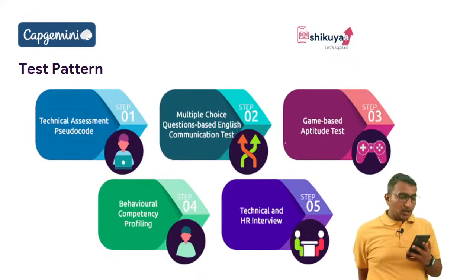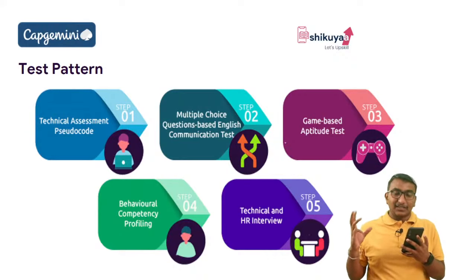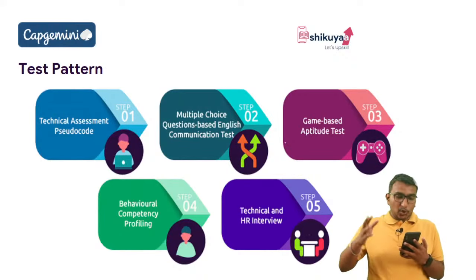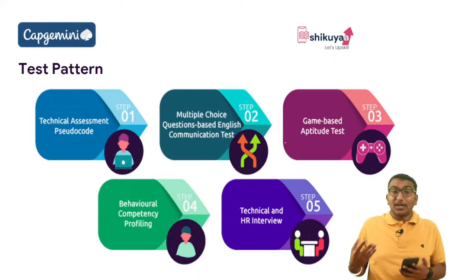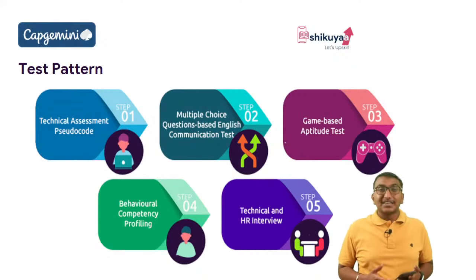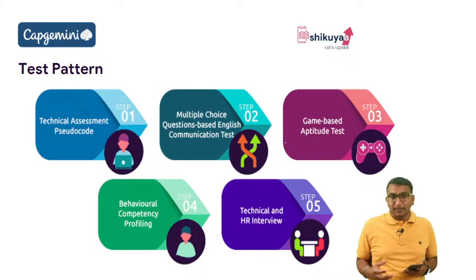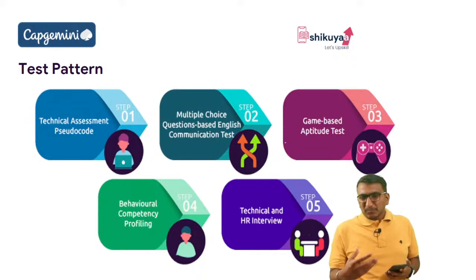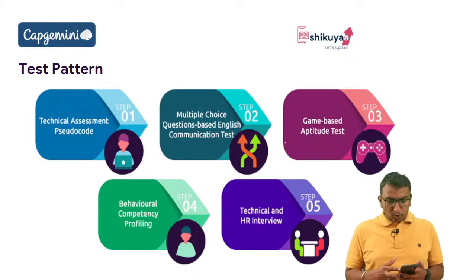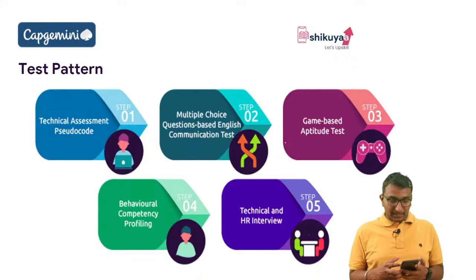All in all, there are three sections that have a sectional cutoff: the first is technical assessment pseudo code, the second is multiple choice questions on English communication test, and the third is game-based aptitude gamified assessment. In today's session I am going to focus more on the game-based assessment.